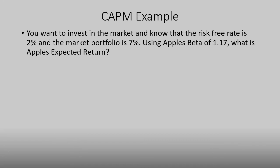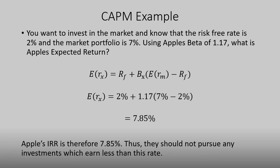Let's see how CAPM is calculated. You want to invest in the market and you know that the risk-free rate is 2% and the market portfolio return is 7%. Using Apple's beta of 1.17, what is Apple's expected return? We just plug the numbers into the formula, and we get an answer of 7.85%.